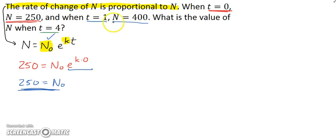So, I've got n sub 0. Maybe I'll use the next piece of information to find k. So, if I'm using this equation again, knowing that I now know n sub 0, when t is 1, n is 400. So, let me start with n. That's 400. And that would equal n sub 0. n sub 0 is 250. e to the k, and t is 1.